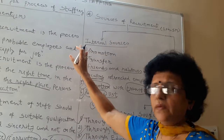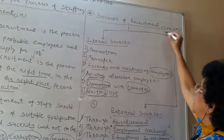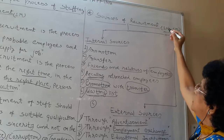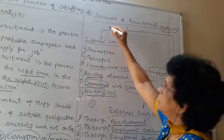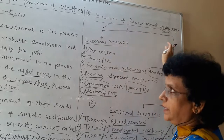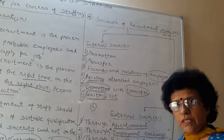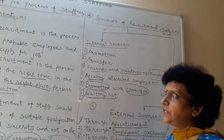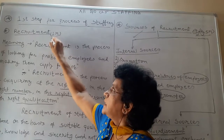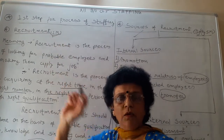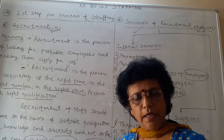In this manner, for a recruitment question worth five marks, you may write one mark for the meaning of recruitment and four marks for the sources of recruitment. It may appear as a five-mark question in section E or as a one-mark question in section B — just the meaning of recruitment. Thank you.